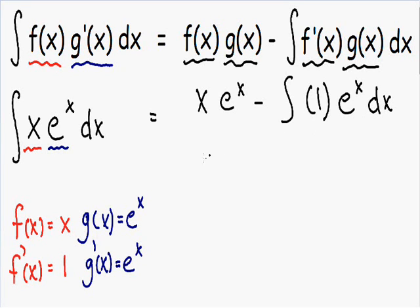So now let's simplify this a little further. Outside the integral we have x times e to the x. And this is being subtracted by the integral of 1 times e to the x. 1 times e to the x is just e to the x. And we can't forget to put the dx.